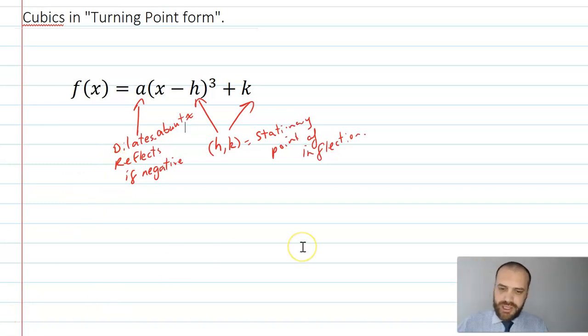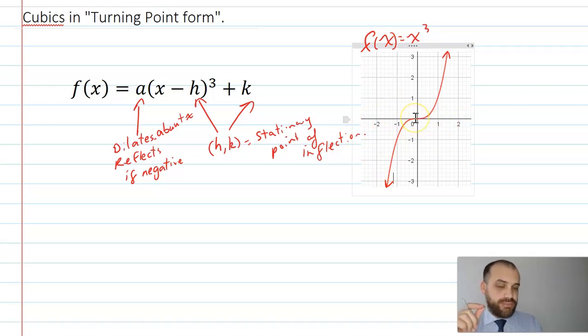This is our function. This h and k value come together to tell us what the stationary point of inflection is. That a value dilates about the x-axis, stretches it about the x-axis, and it will reflect our function if it's negative. The most basic form is f of x equals x cubed, and it will look like this. That is our stationary point of inflection, and that h and k value will transform it and move it around the space.